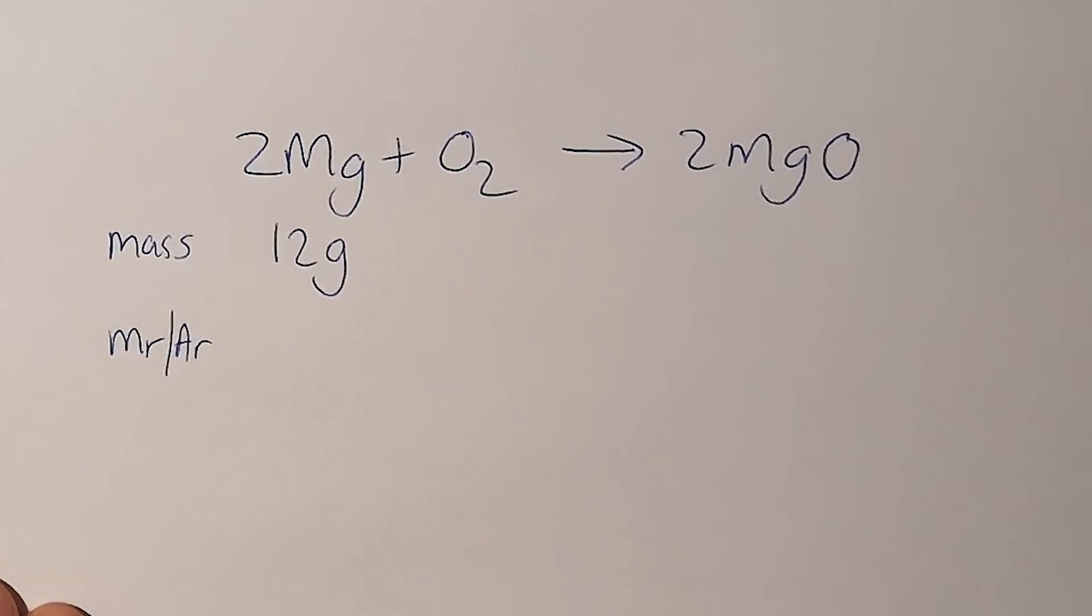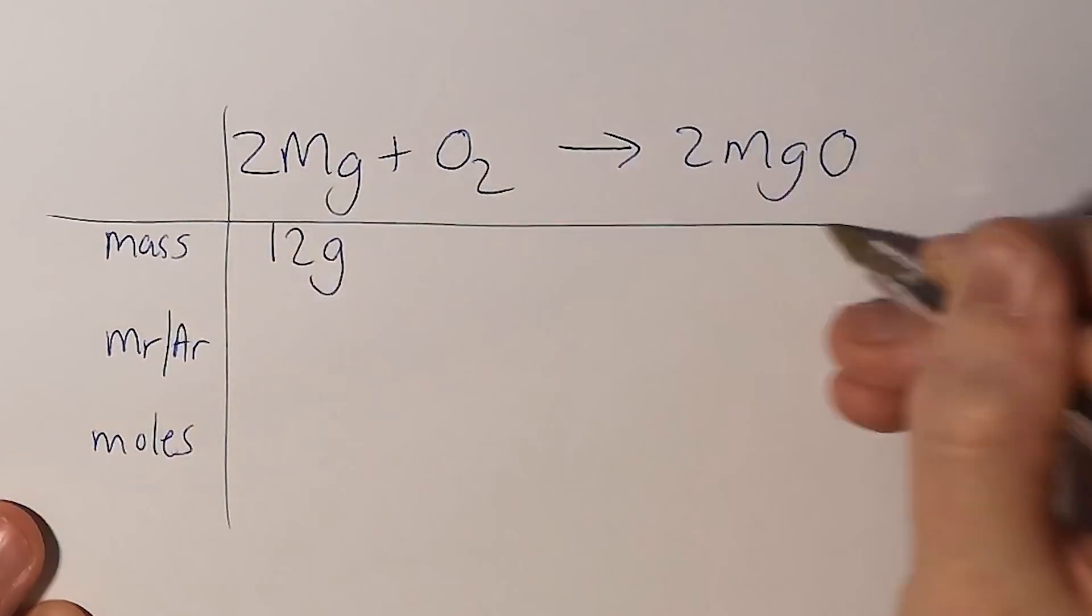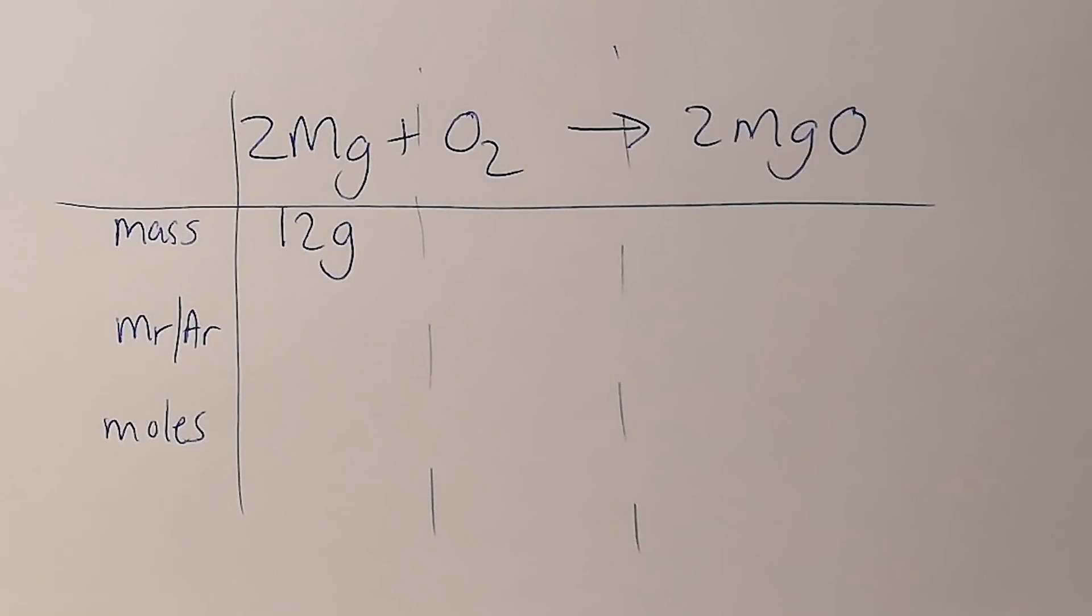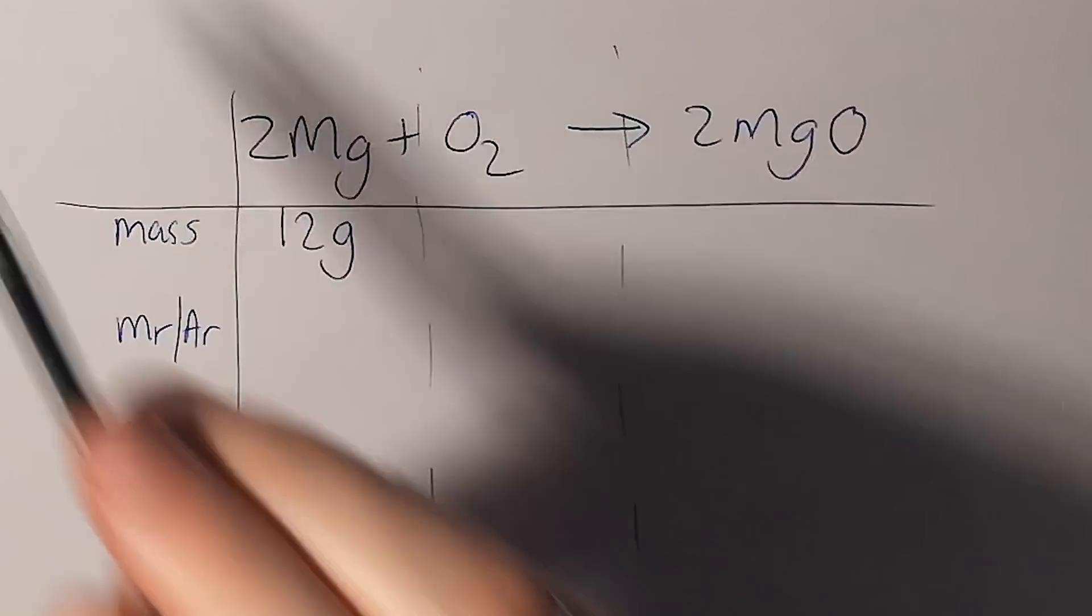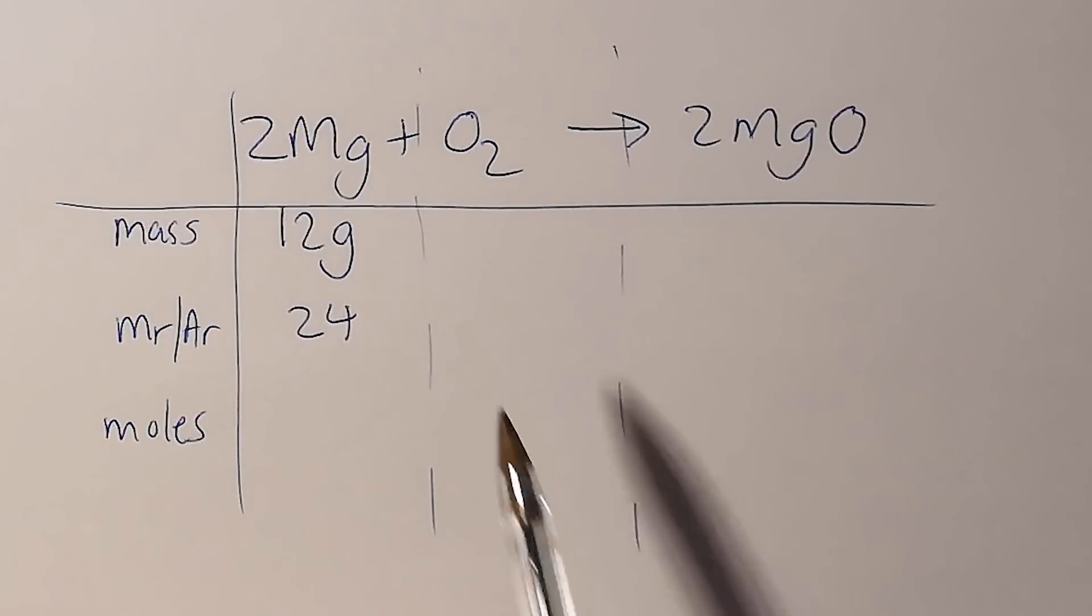I'm going to need to work out moles, and I would recommend drawing a similar table. The Mr of magnesium is 24, so to work out how many moles I've got, I'm going to do 12 divided by 24, which gives me 0.5.